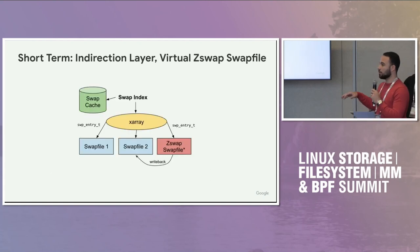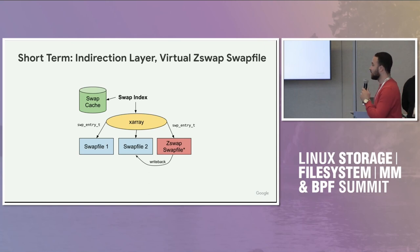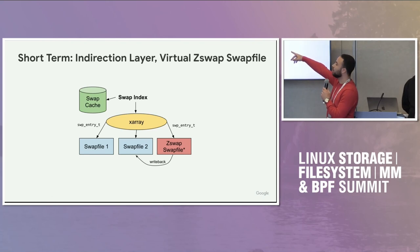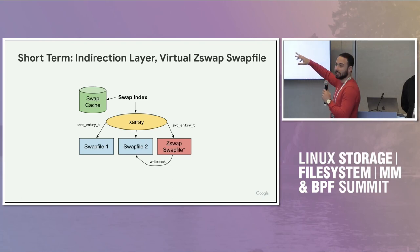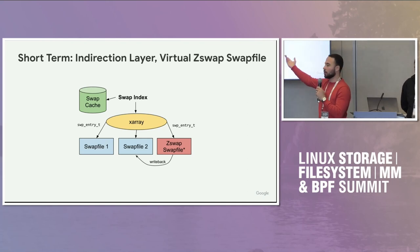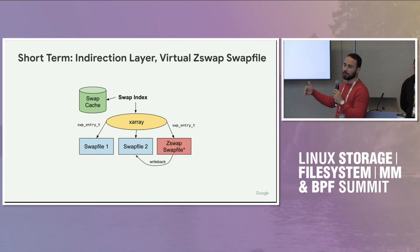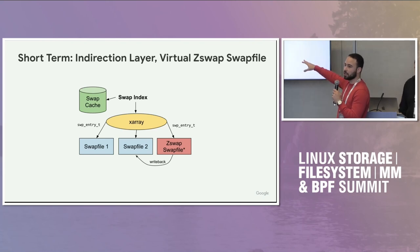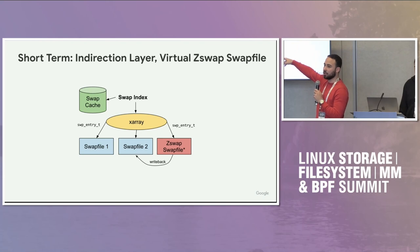So the proposed change, after a lot of discussion on the mailing list, is the simplest idea we can do in the short term: basically introduce a simple interaction layer in the form of an X-Array. Instead of putting the swap entry directly in the page tables or the shmem page cache, we can have an index into a radix tree put in the page tables and shmem page cache and also use it to index the swap cache. This X-Array can then tell us which swap file we're using.